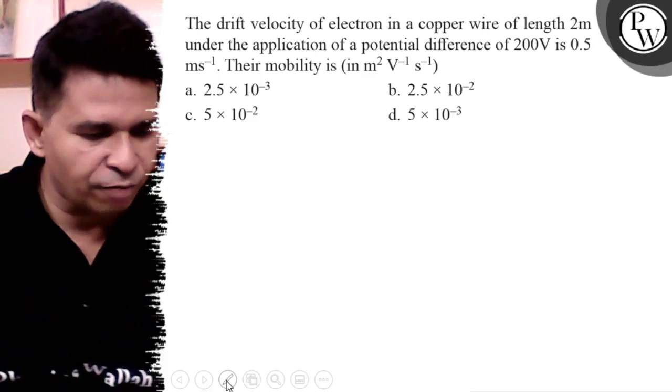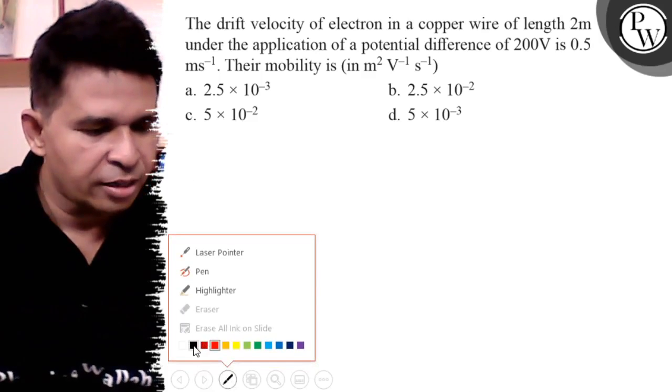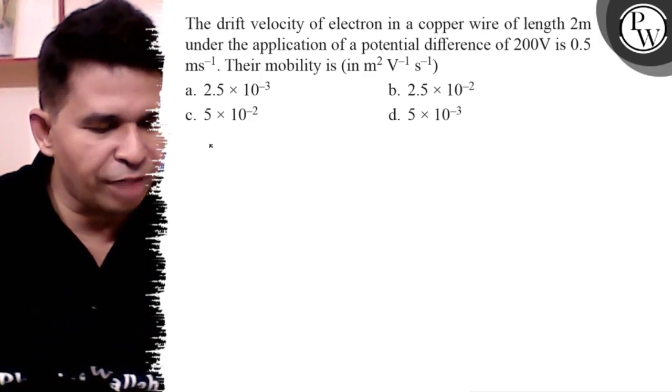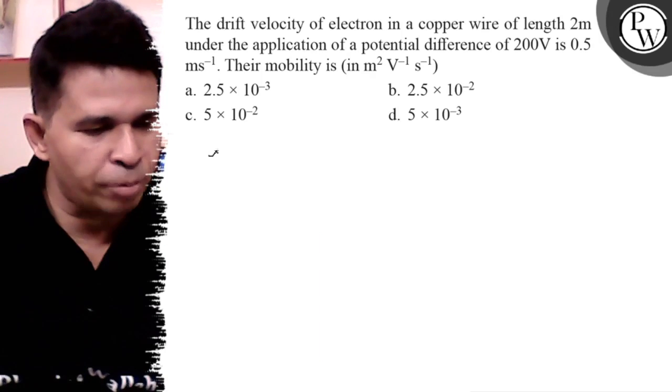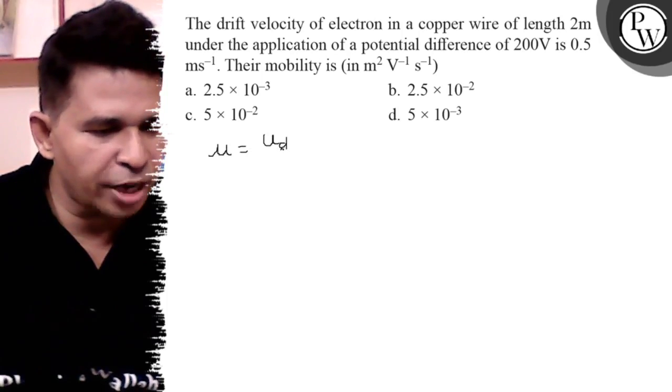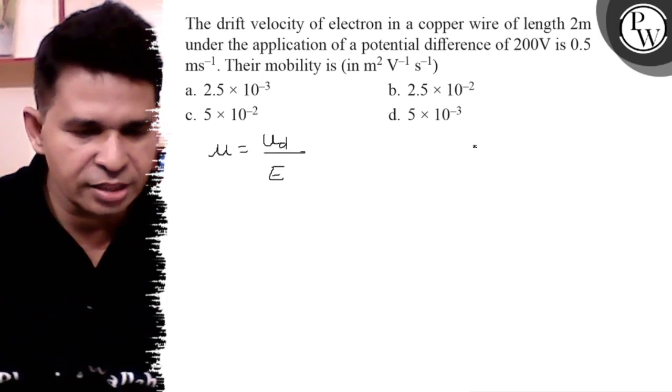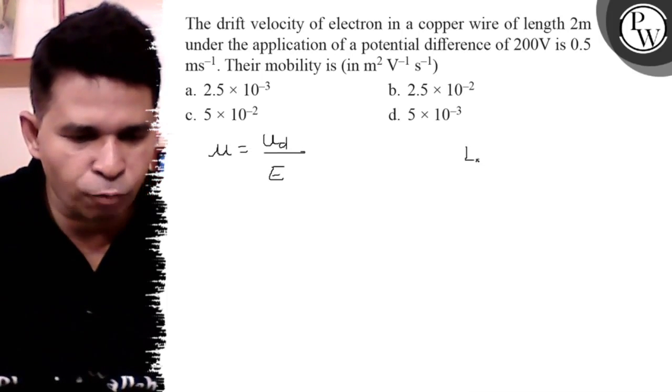So we know the relation between drift velocity and mobility. Mobility is drift velocity per unit electric field, and the electric field is voltage upon distance or length.